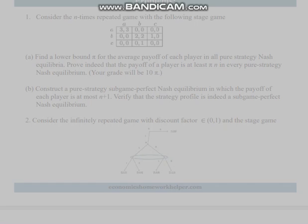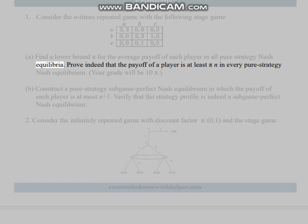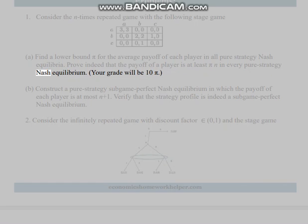Problem 1: Consider the n-times repeated game with the following stage game. Part (a): Find a lower bound π for the average payoff of each player in all pure strategy Nash equilibria. Prove that the payoff of a player is at least π(n) in every pure strategy Nash equilibrium.